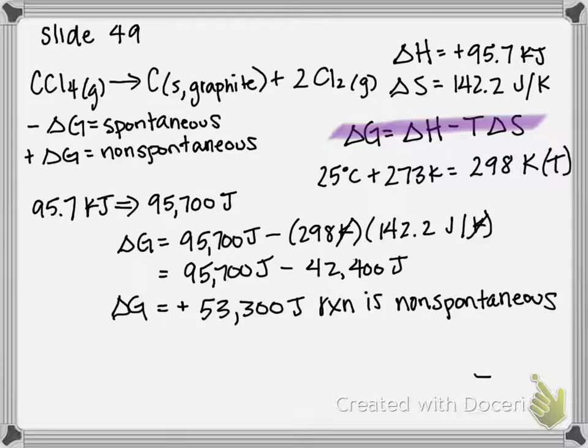So since it is non-spontaneous, the second part of the question asks us to determine what temperature the reaction becomes spontaneous. The very first time that something can be technically spontaneous is when delta G is equal to zero. So we're going to set our delta G in our equation equal to zero, plug in our values for delta H and delta S, and solve for temperature.